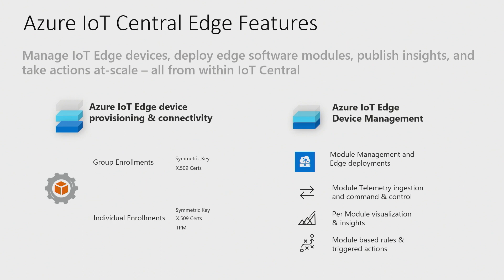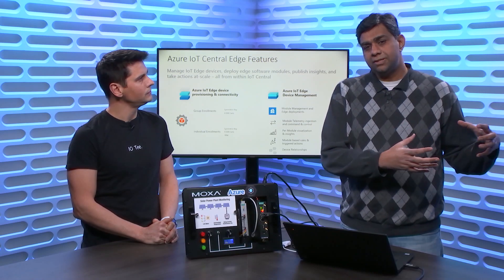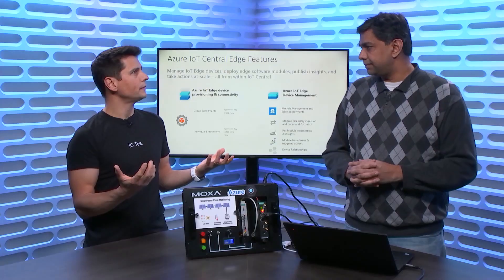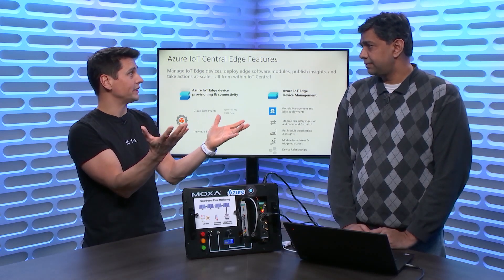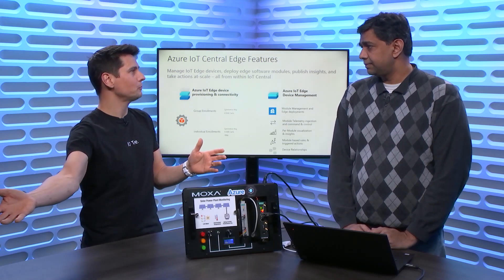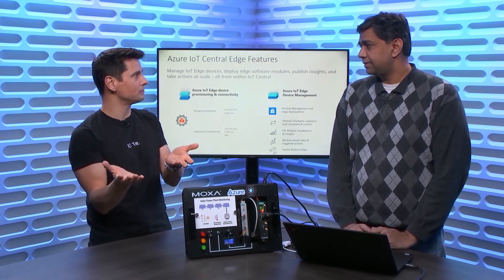We also have device relationships. In Central, whatever devices are running on the Edge — both the gateway device and the downstream devices — that view is brought into an operator experience where the operator can look at a gateway device and see all its connected downstream devices. For example, you might have a conveyor belt on the factory floor, and if you want to send commands to leaf devices from the gateway, you go to the gateway, find its leaf devices, and start sending commands.